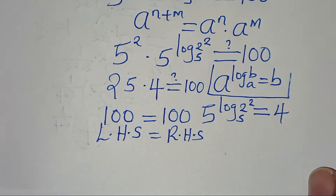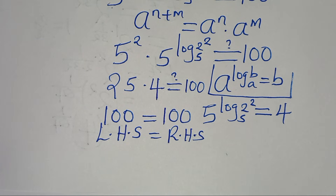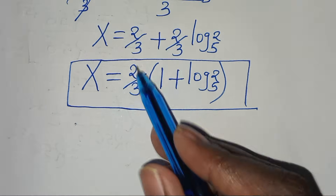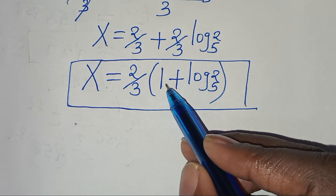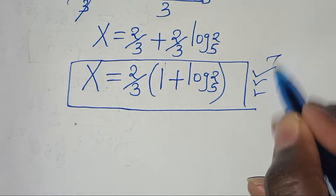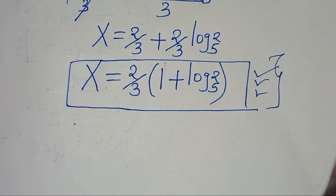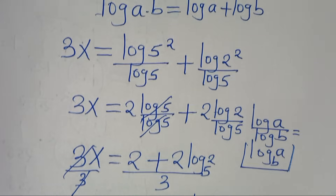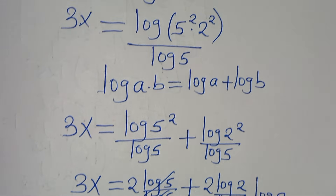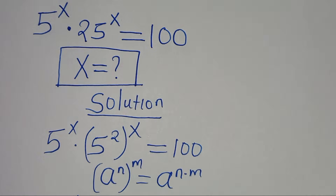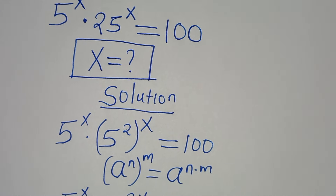The left-hand side equals the right-hand side, confirming that x = (2/3)(1 + log₅(2)) satisfies the equation. Please follow the steps, like this video, and kindly subscribe. See you in the next video!